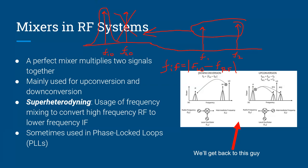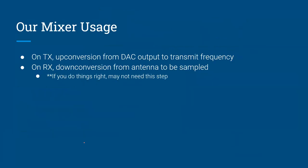That's essentially what we're going to be doing with this communication system, though we're only going to be receiving one thing and just down-converting it. On the transmitter side, we're going to be up-converting the DAC output, which is a lower frequency, to that 27 MHz transmit frequency. On the receiver side, we're going to be down-converting the received 27 MHz to a lower frequency so we can sample it — though if you do things right, you may not need this step.